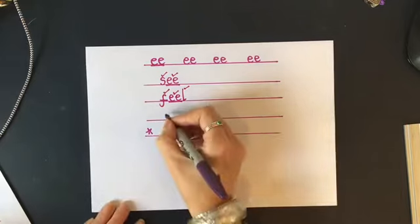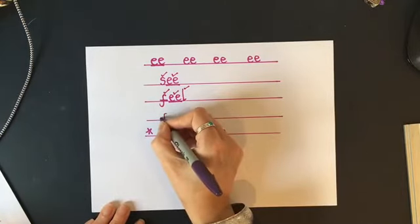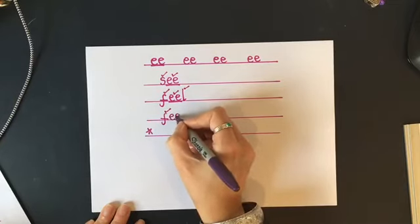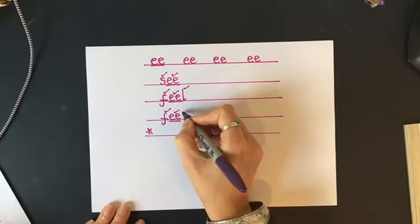Right. Let's mark it. F. Give yourself a tick if you've got that one right. Special friends. E, E. And T at the end. Well done.